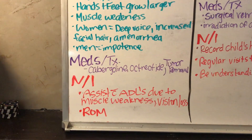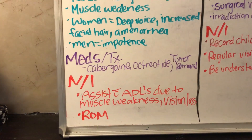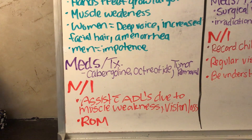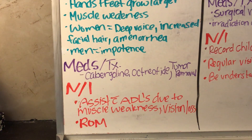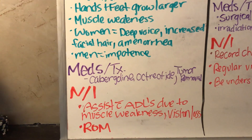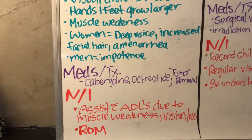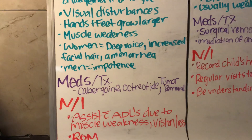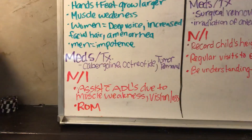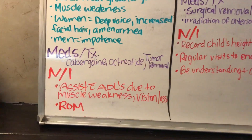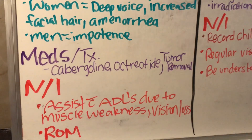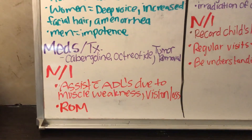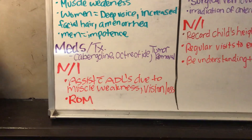Medications for acromegaly include cabergoline and octreotide. If the cause is a tumor, you can do tumor removal. For nursing interventions, you want to assist the patient with ADLs due to their muscle weakness or vision loss, and you want to encourage range of motion.